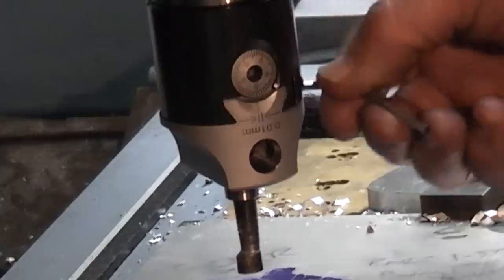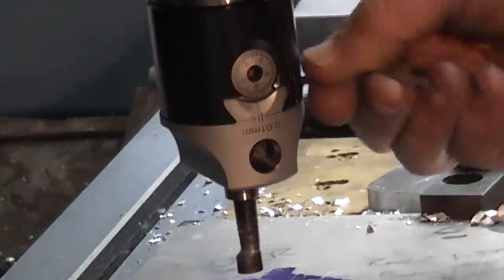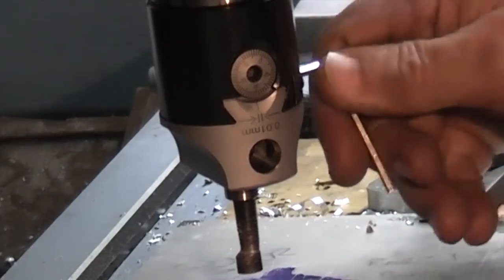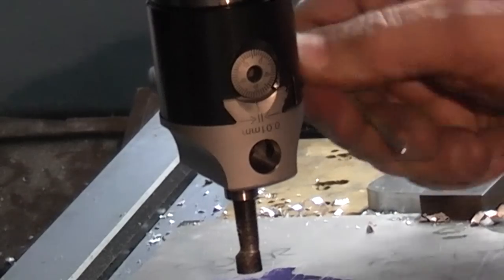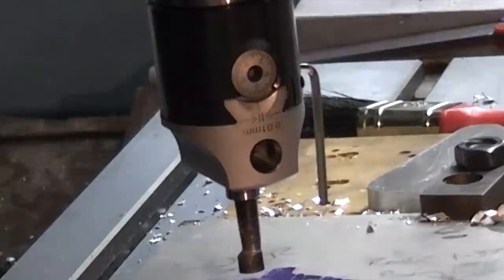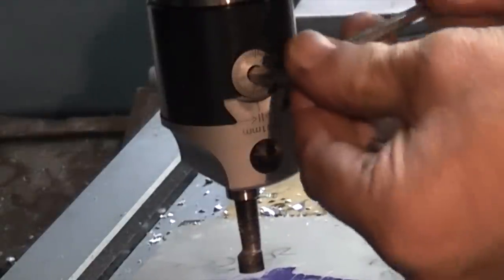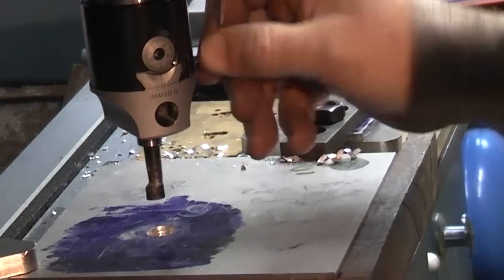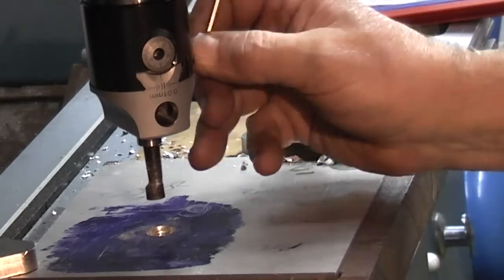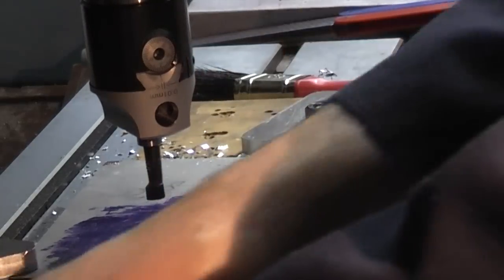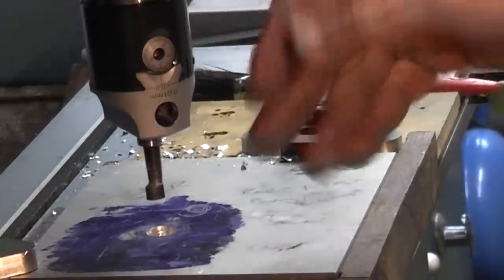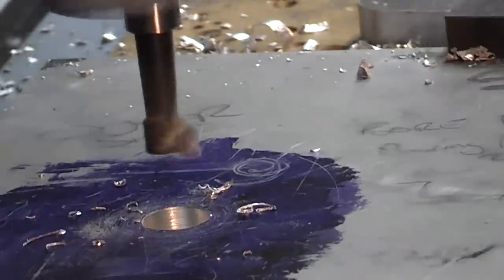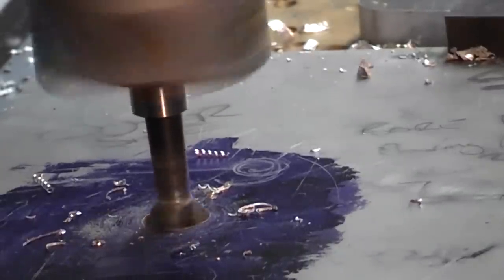First allen key slacking off the side there, and the second one will put the cut on. So I'm turning this clockwise and it's pushing the tool out.